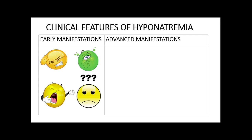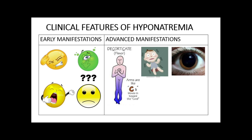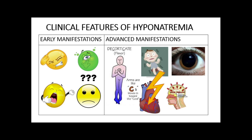Advanced manifestations range from decorticate posturing, seizures, various ophthalmic manifestations like pupillary dilatation, anisocoria in which the pupillary size of the two eyeballs are not equal, papilledema, cardiac arrhythmias, brain swelling or cerebral edema that leads to brainstem herniation, coma and death.